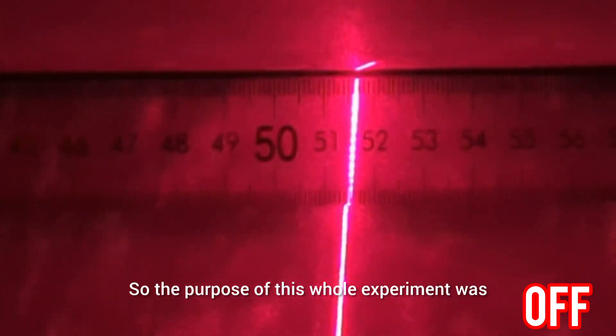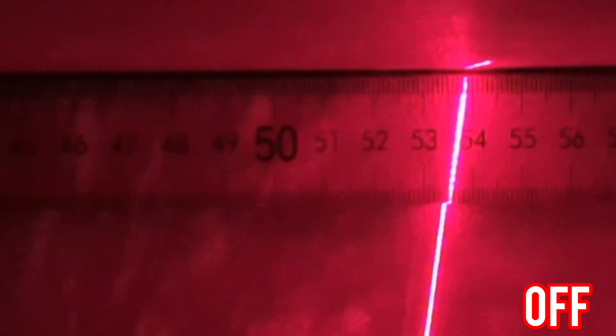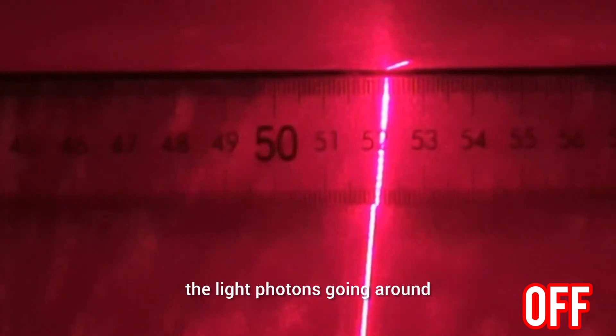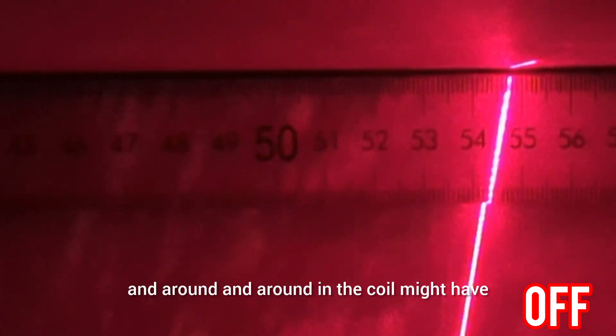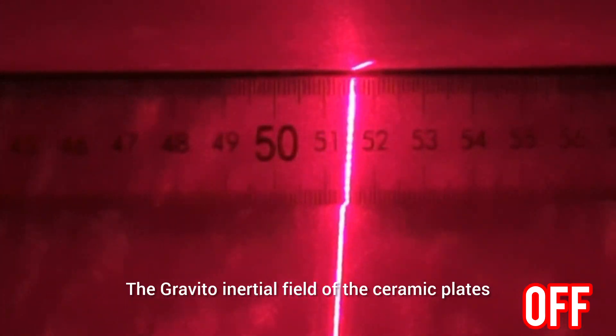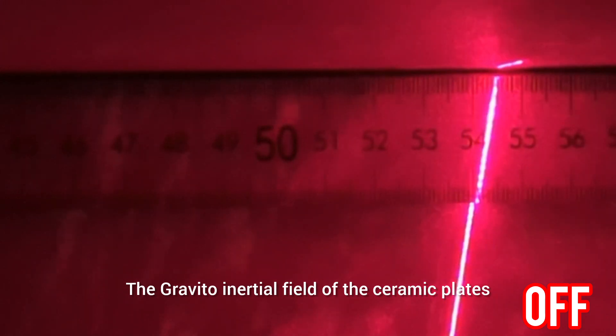The purpose of this whole experiment was just to explore something like a modified Cavendish experiment and to see if the light photons going around and around in the coil might have some influence on the gravitoinertial field of the ceramic plates.